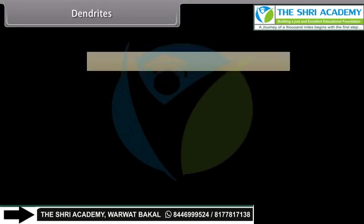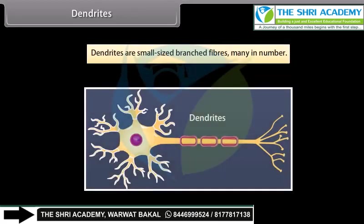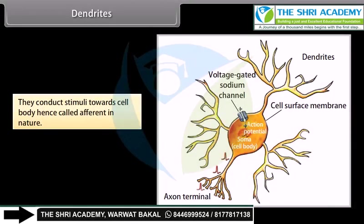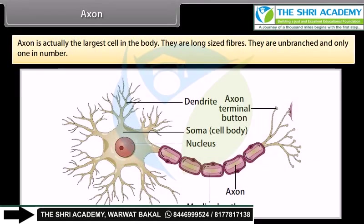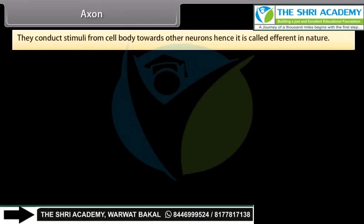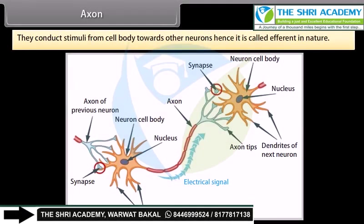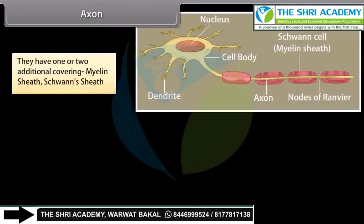Dendrites are small-sized branched fibers, many in number. They conduct stimuli towards the cell body, hence called afferent in nature. The axon is the largest fiber in the cell. Axons are long, unbranched, and only one in number. They conduct stimuli from the cell body towards other neurons, hence are called efferent in nature. They have one or two additional coverings: the myelin sheath and the Schwann sheath.